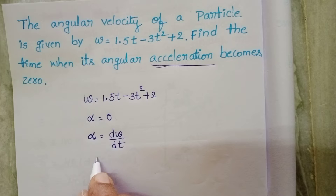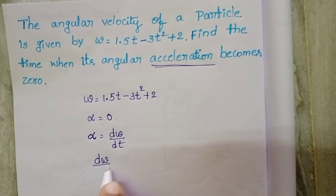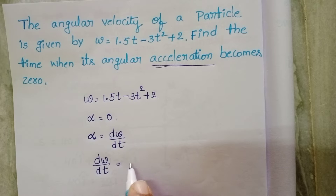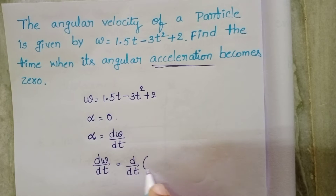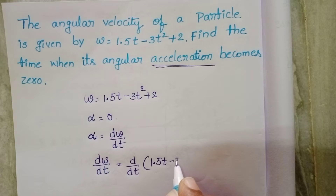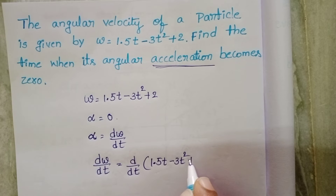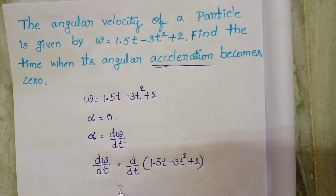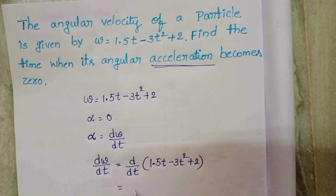From this, d-omega by dt equals d by dt of 1.5t minus 3t squared plus 2. Differentiating with respect to time, dt by dt equals 1.